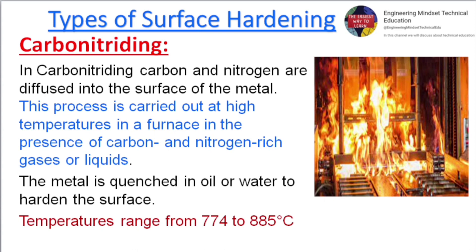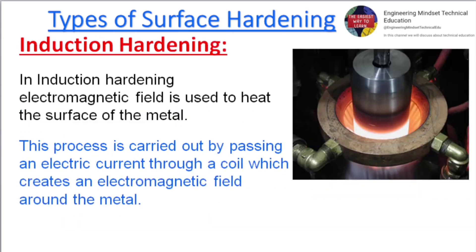Carbonitriding: carbon and nitrogen are diffused into the surface of the metal. This process is carried out at high temperatures in a furnace in the presence of carbon and nitrogen-rich gases or liquids. The metal is quenched in oil or water to harden the surface. Temperatures range from 774 to 885 degrees Celsius.